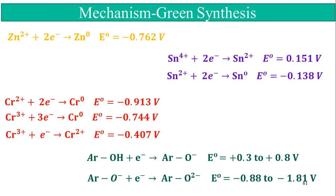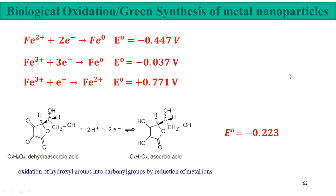Another important example is the biological or green synthesis of metal nanoparticles using natural products. One example is vitamin C — ascorbic acid — with a half-cell potential of -0.223 V. When oxidized to dehydroascorbic acid, it may have the ability to reduce Fe³⁺ to the iron zero valent oxidation state. At standard conditions, this half-cell potential must be at the cathode and ascorbic acid at the anode.